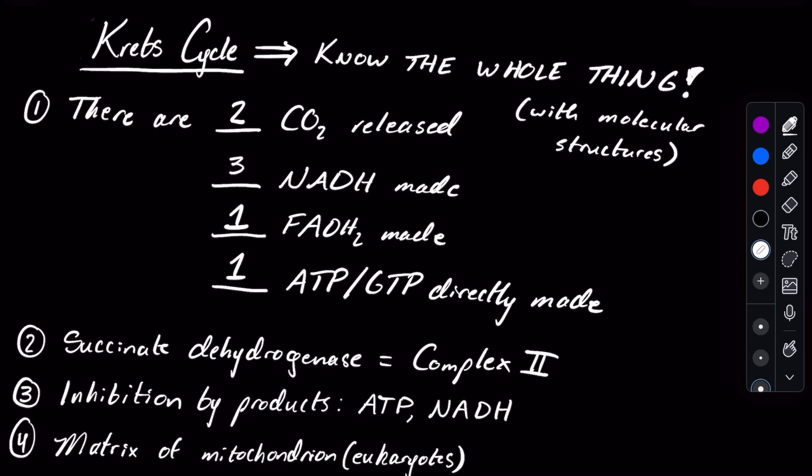Another thing they like to test on is that the Krebs cycle will be inhibited at certain trigger points — namely a few enzymes — by the products that it makes, such as ATP or NADH. The Krebs cycle is going to work less hard when there's an energy-rich state, when there are high levels of ATP and NADH, which makes sense. You don't want to keep working hard if you already have a lot of the products of whatever you're making.